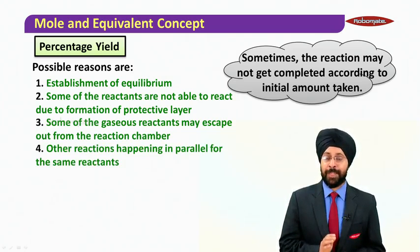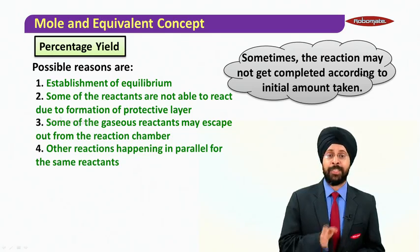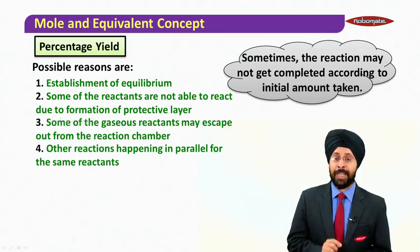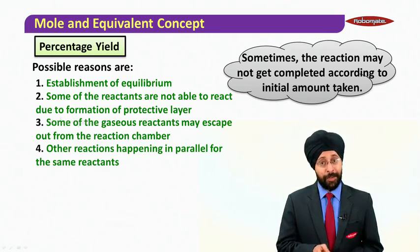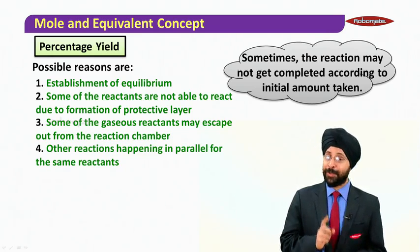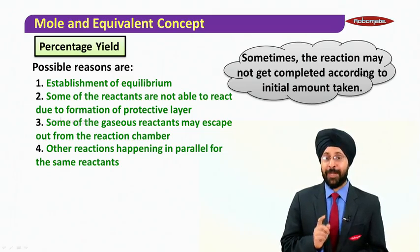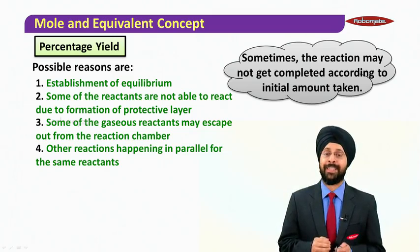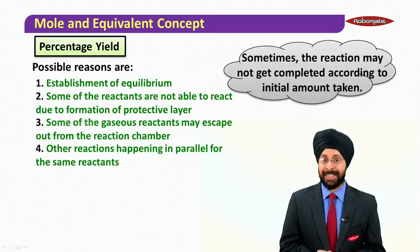And the fourth possible reason can be other reactions happening in parallel for the same reactants. Now N2 and H2 can give you ammonia NH3, but they can also combine to give you N2H4 which is called hydrazine. So you may not get ammonia in total that you are thinking.